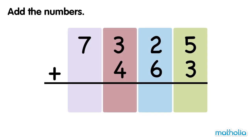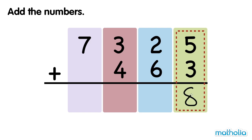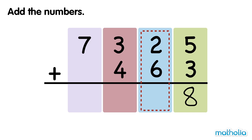Add the numbers. Start by adding the ones. 5 ones plus 3 ones equals 8 ones. Next, add the tens. 2 tens plus 6 tens equals 8 tens.